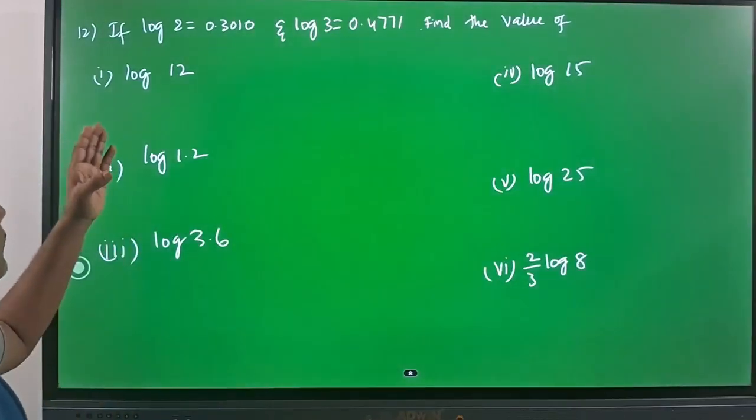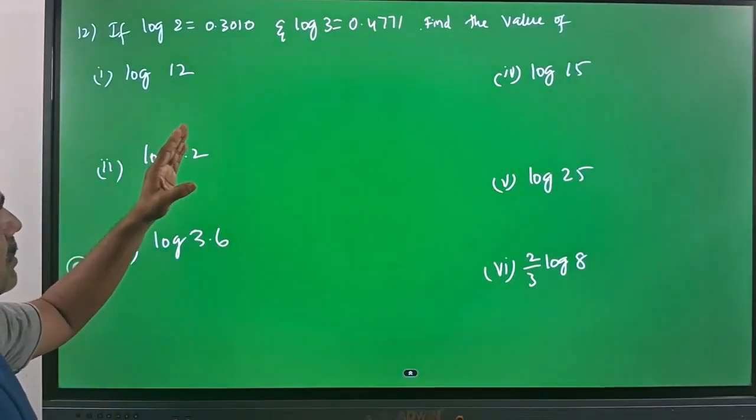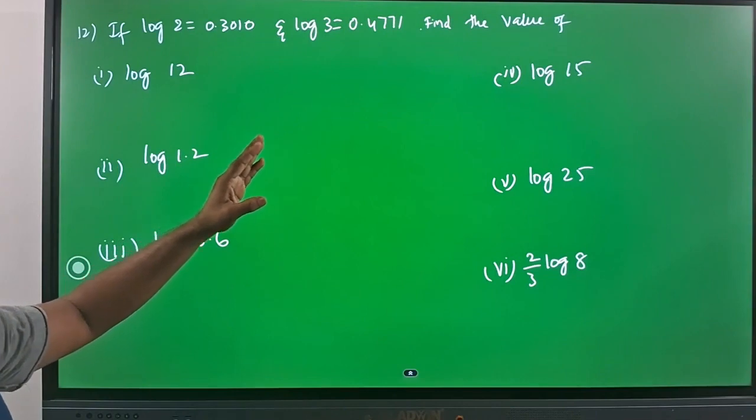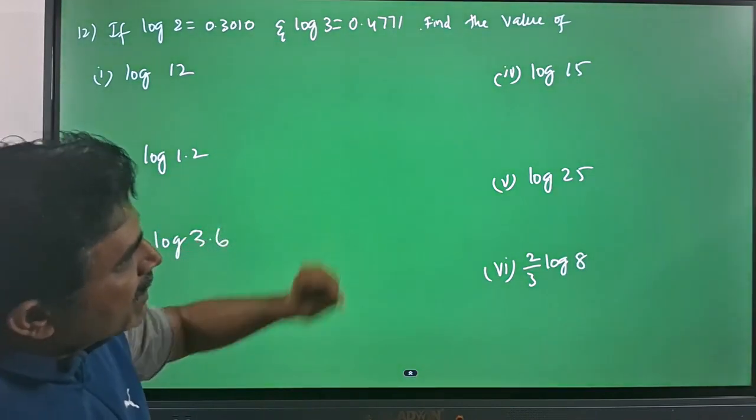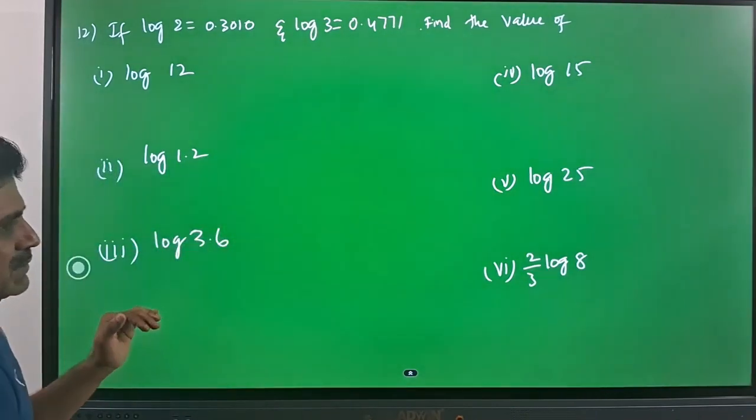Our next question is: if log 2 is equal to 0.3010 and log 3 is equal to 0.4771, find the value of given 6 values.